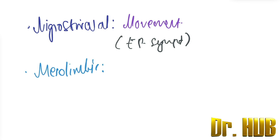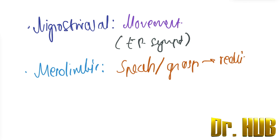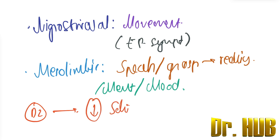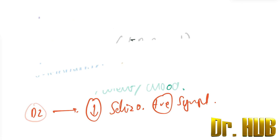Next, we look at the mesolimbic pathway. The mesolimbic pathway deals with speech, grasp of reality, mentation, and mood. The action of the drug blocking the D2 receptors here reduces the positive symptoms of schizophrenia.